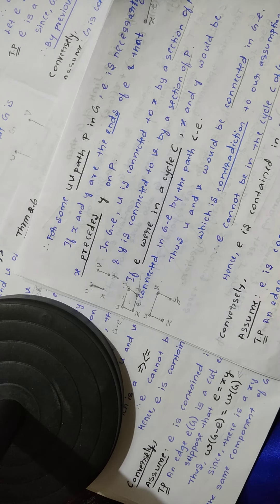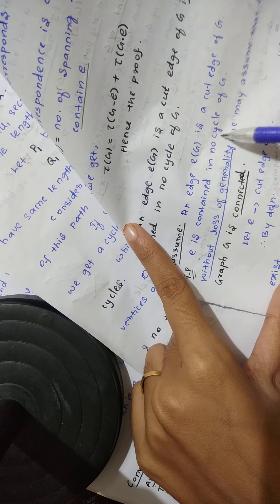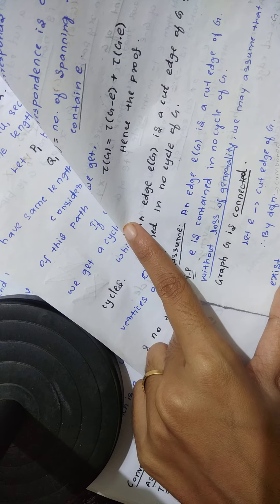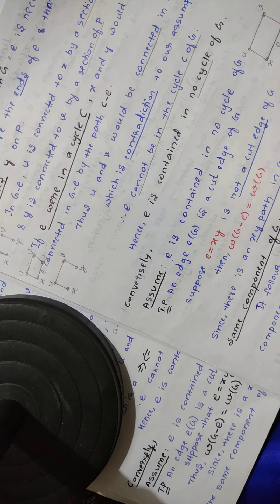Now we enter the main part. We have to prove E is contained in no cycle of G. If E were in a cycle C, then X and Y would be connected in G minus E.